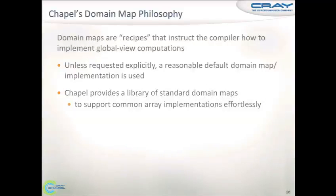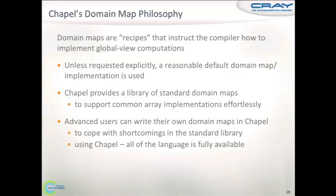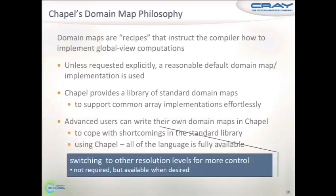To summarize: domain maps serve as recipes for how to implement the data and how to implement computation. Chapel provides a set of domain maps — we've seen block and cyclic, and there are several domain maps for laying out arrays on a single locale. More interestingly, the user can step in and write their own domain map should that be necessary, using the full power of Chapel. Writing domain maps is at the moment a pretty challenging affair, but the fact that you can use Chapel — such a nice language — makes it much more pleasant and enjoyable. You can use all the resolution levels of Chapel, but you don't have to if you don't need to.